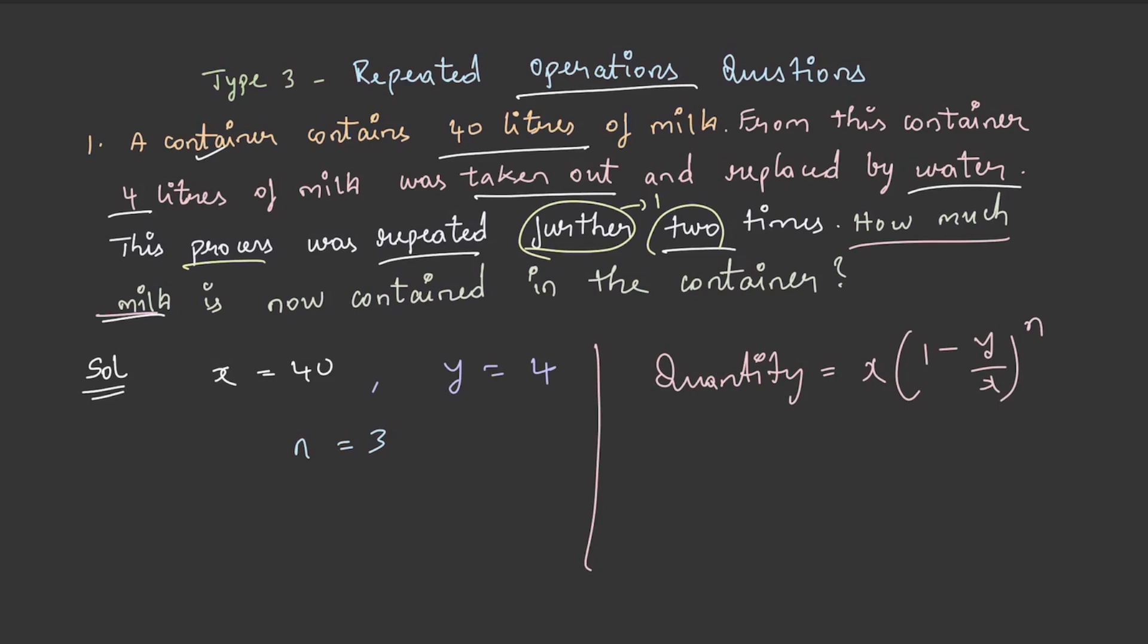We know the values and need to substitute: 40 × (1 - 4/40)^3. On simplification, this becomes 40 × (9/10)^3, which equals 29.16 liters.